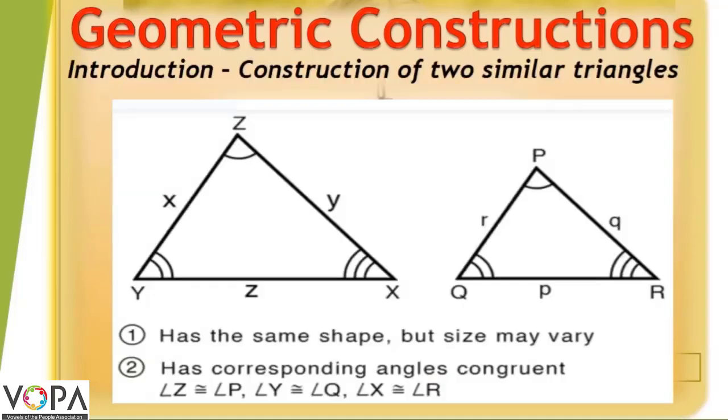When the given two triangles are similar, then both has same shape as shown in figure but size may be different. The two similar triangles has corresponding angles and they are always congruent. Here, in figure, angle Z is congruent to angle P, angle Y is congruent to angle Q, angle X is congruent to angle R.